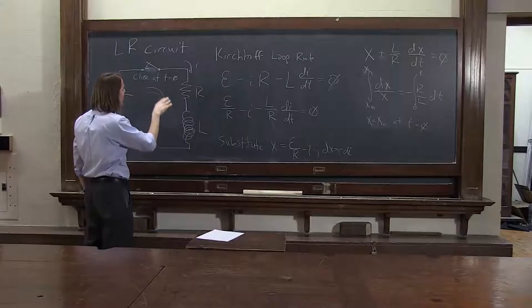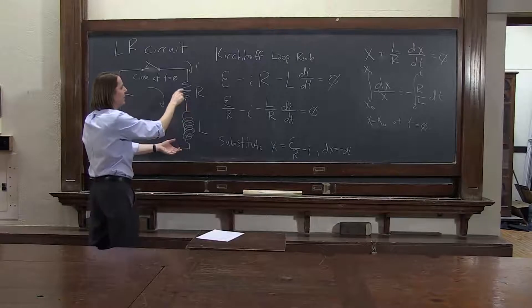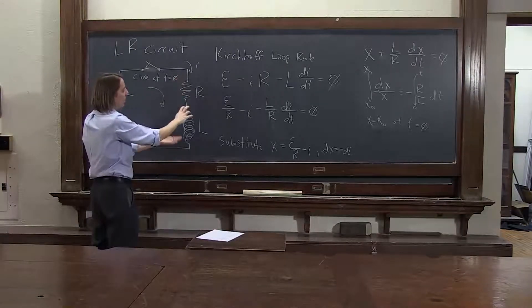When you first close the switch, all your emf drop is all across the inductor, and none of it is across the resistor, because the current's 0. There's no drop here. All the drop is here.